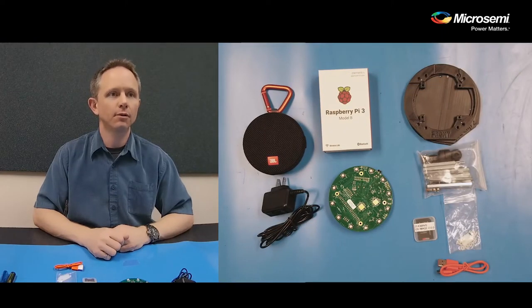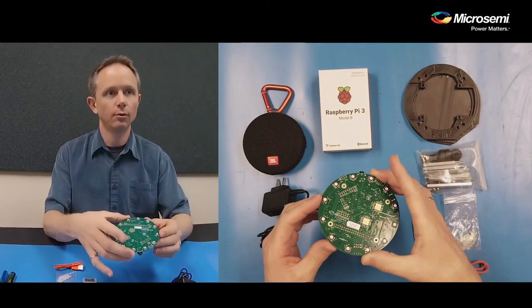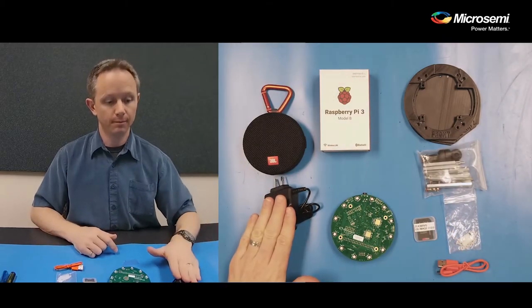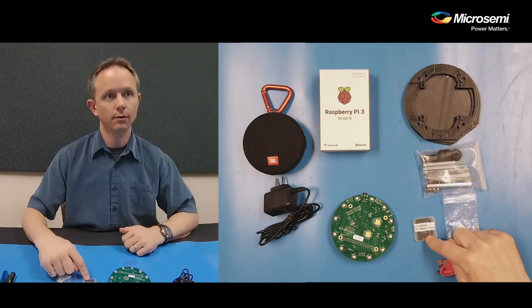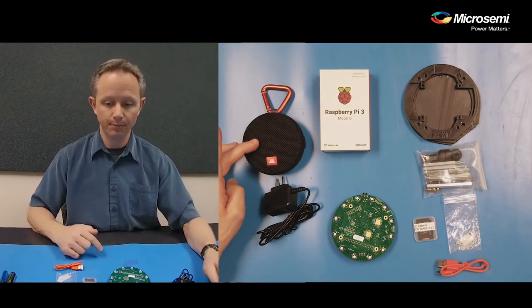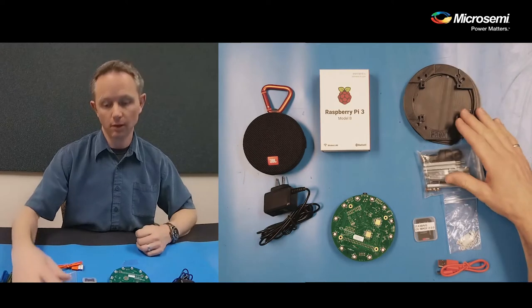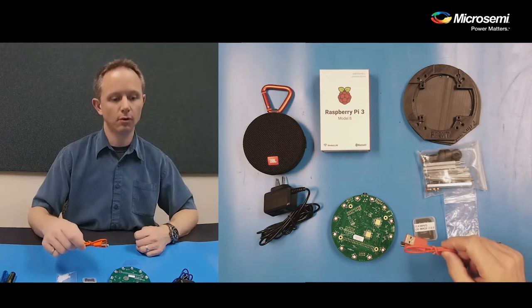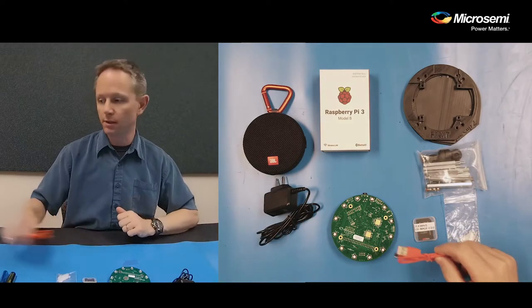The kit is shipped with the ZLE38ABS2 board, a Raspberry Pi, a power supply, an SD card for the Raspberry Pi, a JBL Clip2 speaker, plastics and standoffs for assembling everything else, and there is a USB cord for charging the JBL speaker as well.